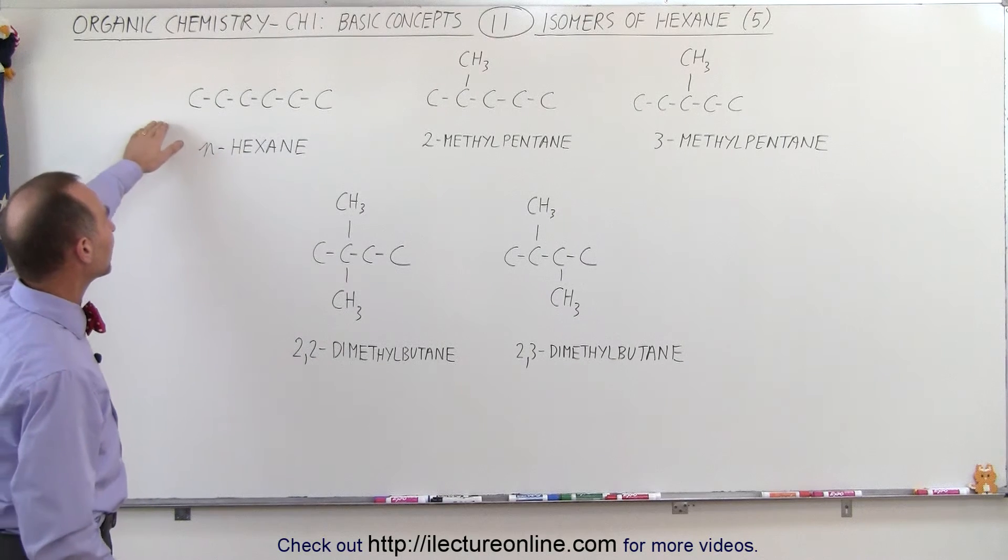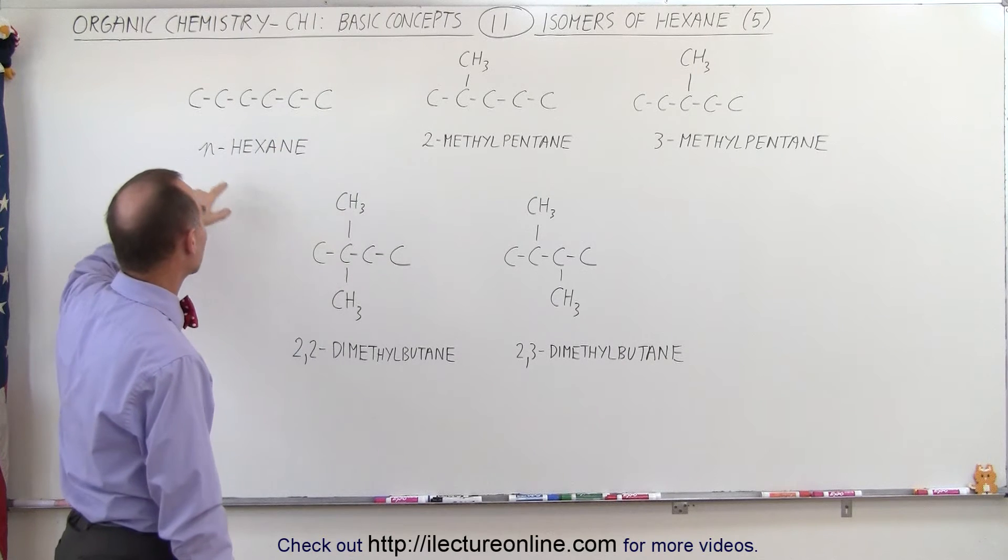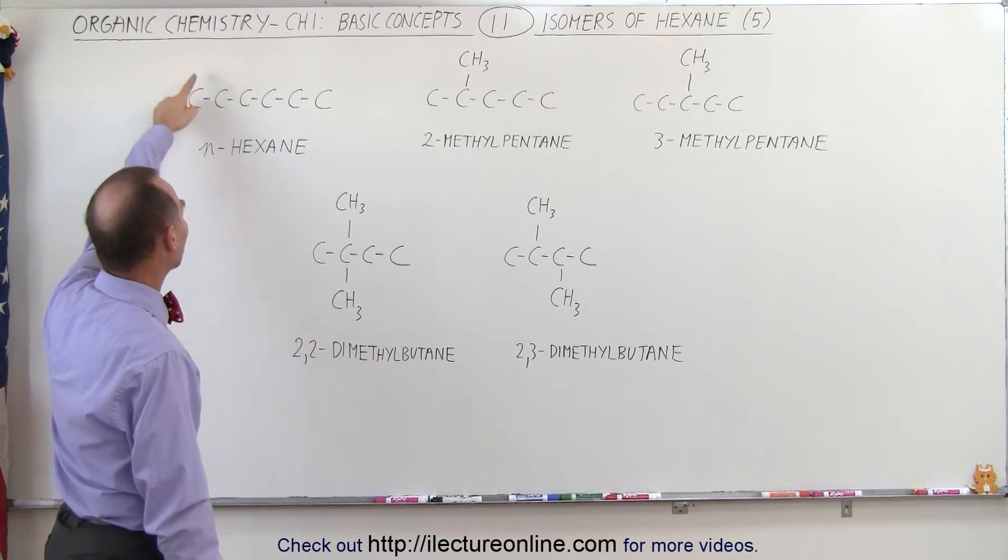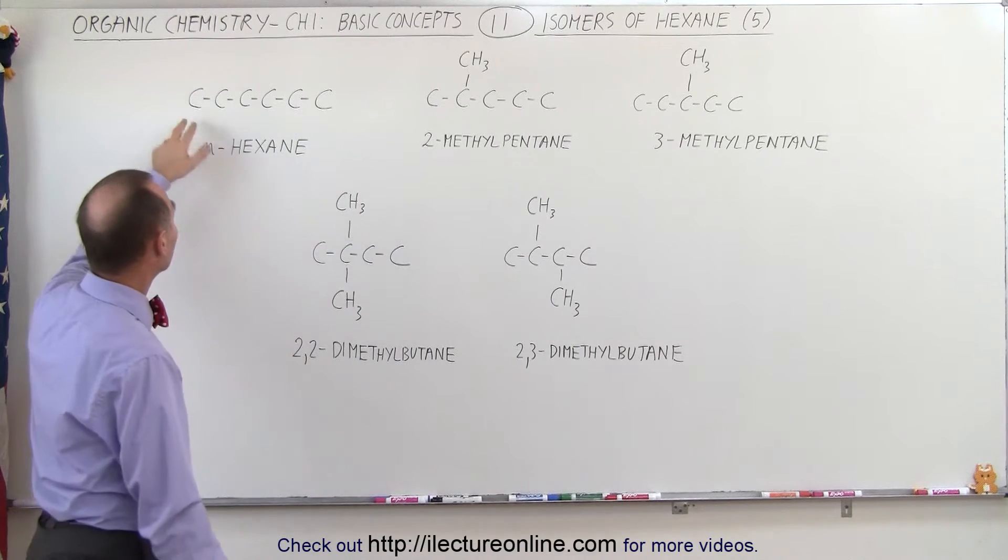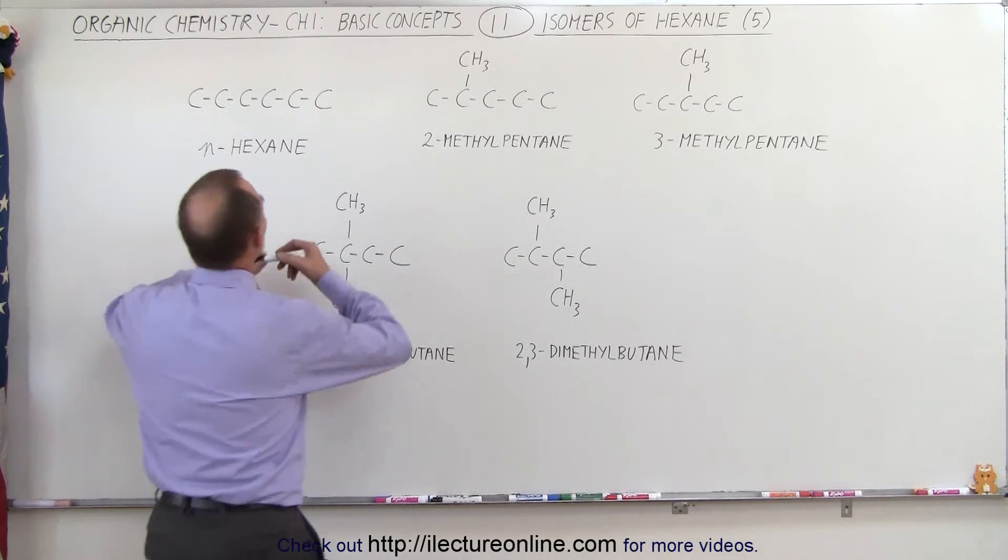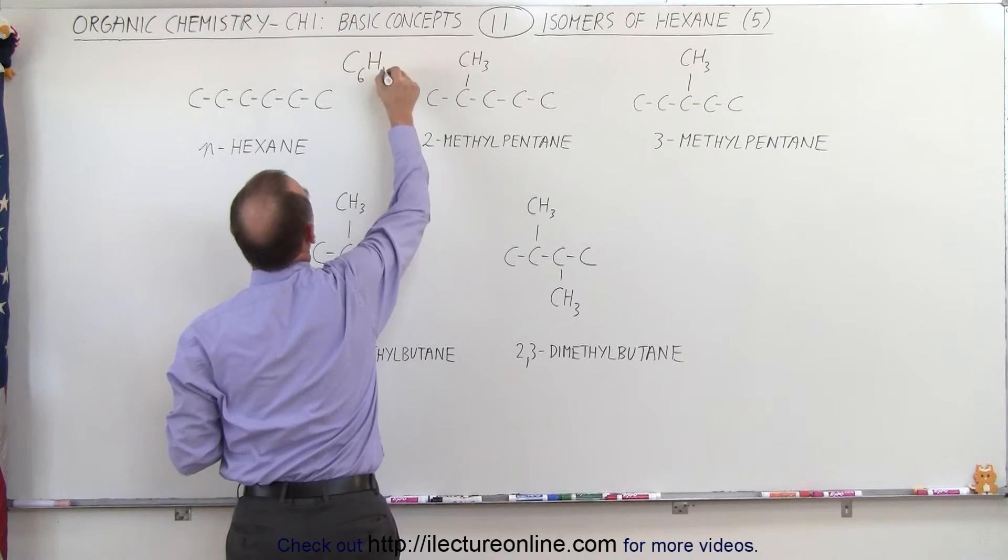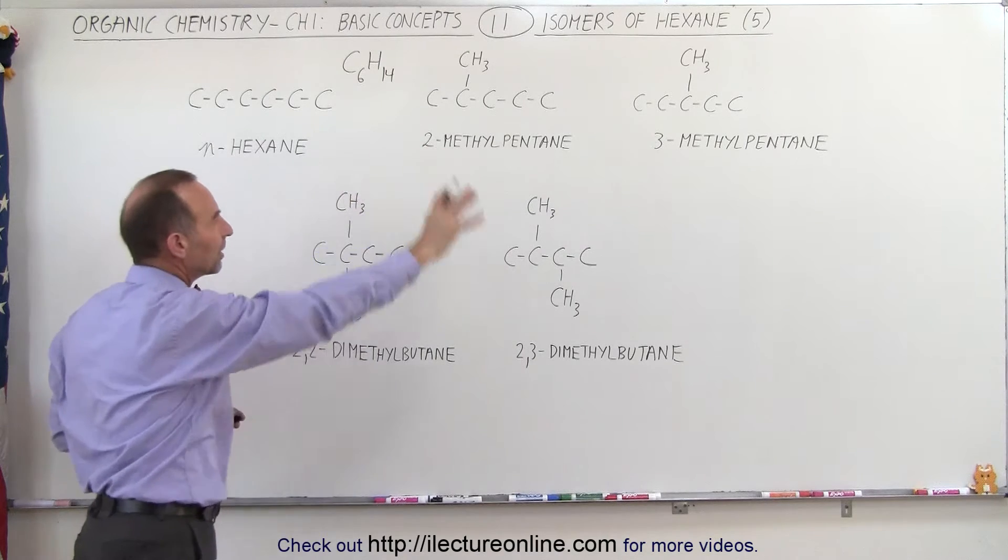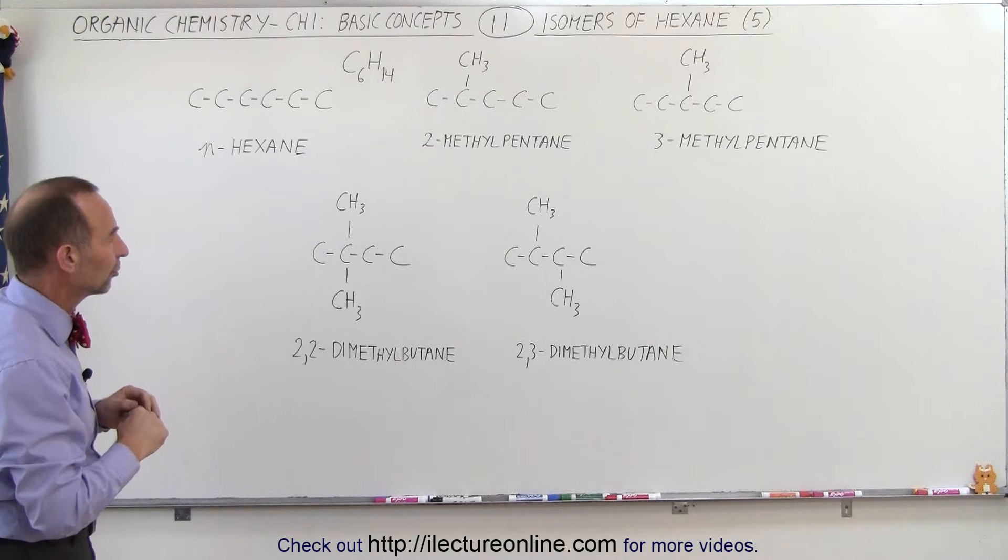Here we have the straight line hexane, where we have the six carbons in a row in a string. It's called n-hexane, and obviously each carbon would be connected, where possible, with a hydrogen. Three for the ones at the end, and two for the ones in the middle, so that the chemical formula would be C6H14. And all of these have the same chemical formula of six carbons and 14 hydrogens.